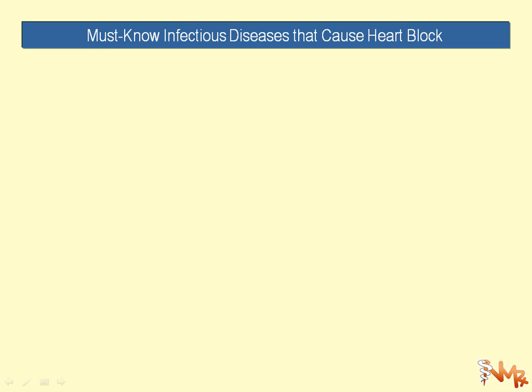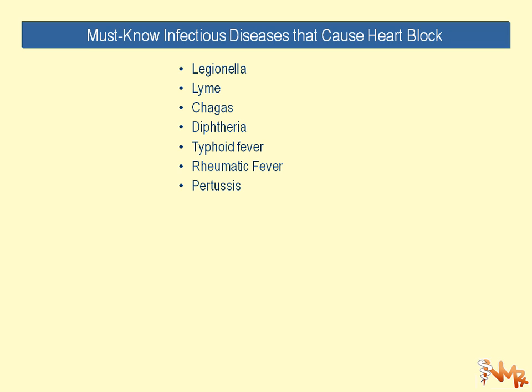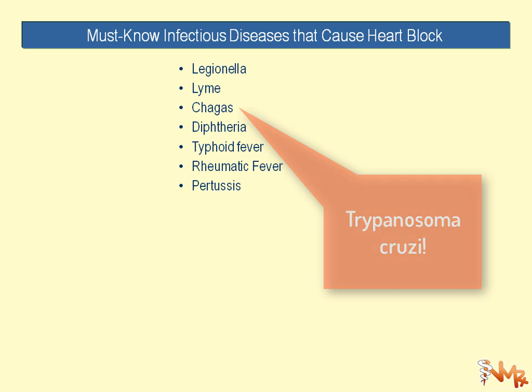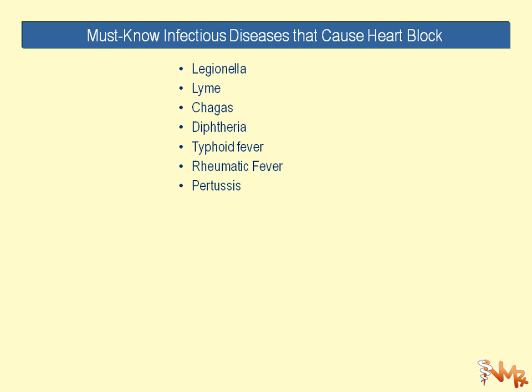What are the major infectious diseases that cause heart block? The must-know ones for USMLE and board examinations are: Borrelia (Lyme disease), Chagas disease, diphtheria, typhoid fever, rheumatic fever, and pertussis.